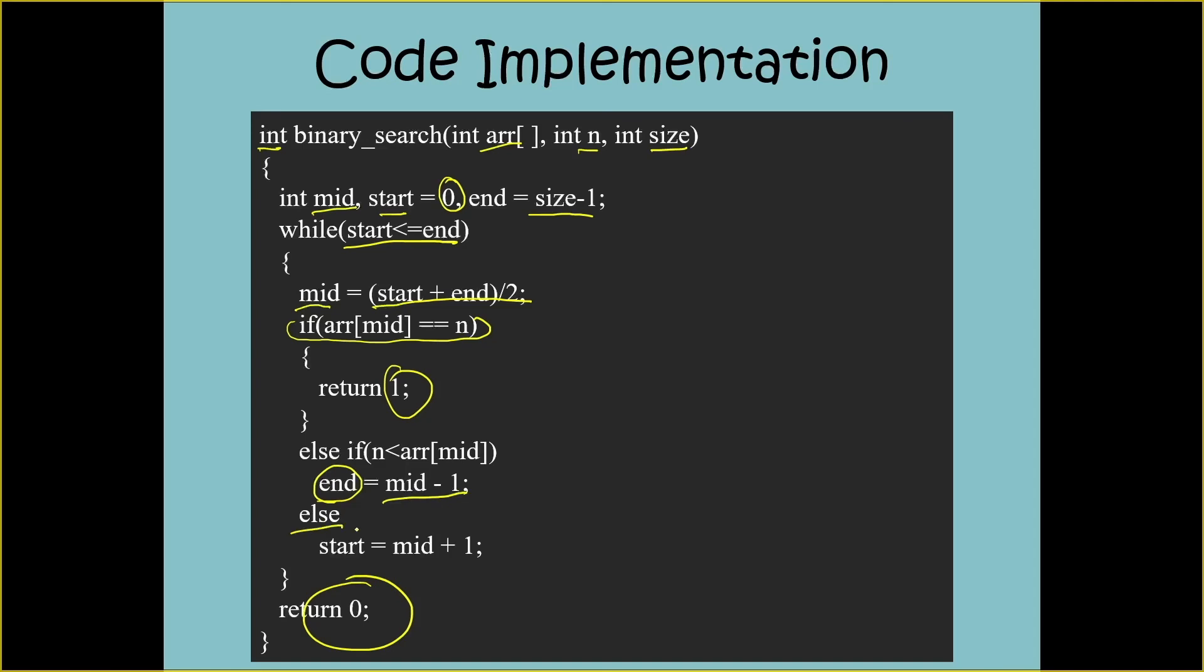The last condition is where n is greater than arr of mid. I have not written that condition because that is obvious. In this case we are searching for the element on the right side of the middle point. So we are going to move the start to one point after the middle element, and that's how we implement binary search in C++.